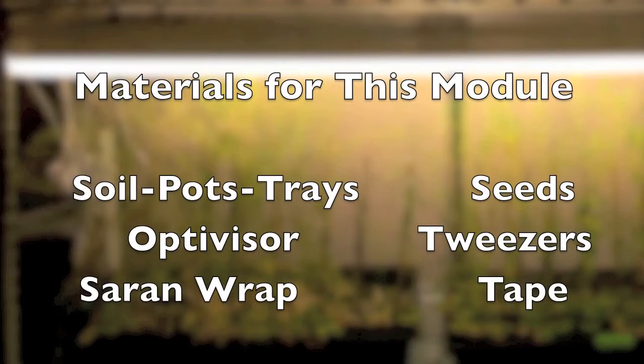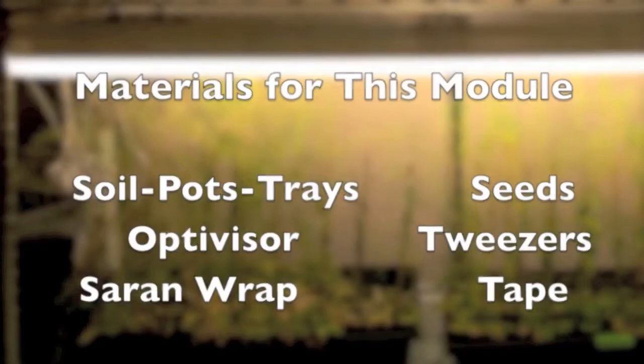For this experiment, you will need all the materials necessary to grow plants, including soil, pots, and trays. You will also need the seeds provided in this module, an optivisor or magnifying glass, a pair of tweezers, saran wrap, and tape.